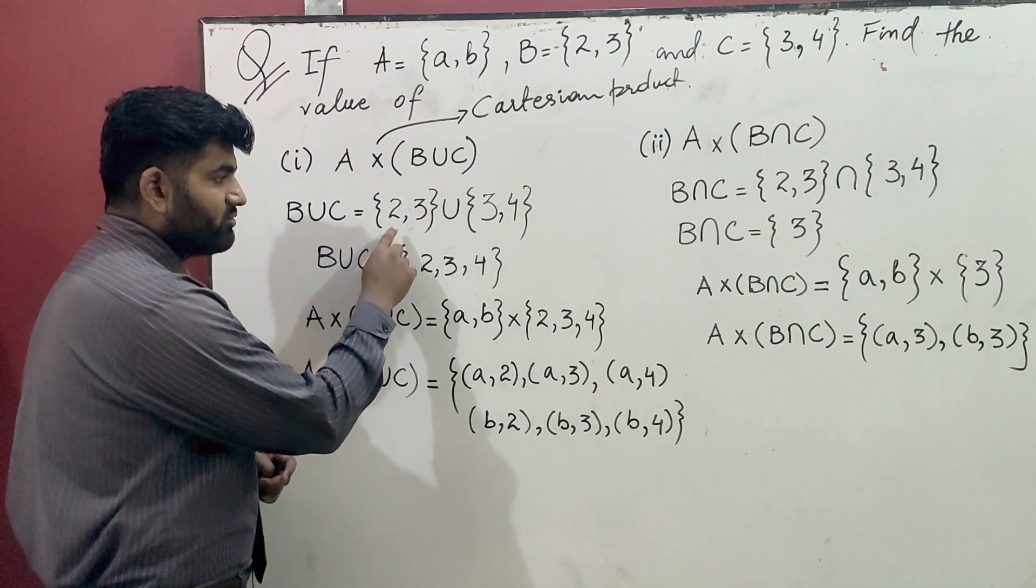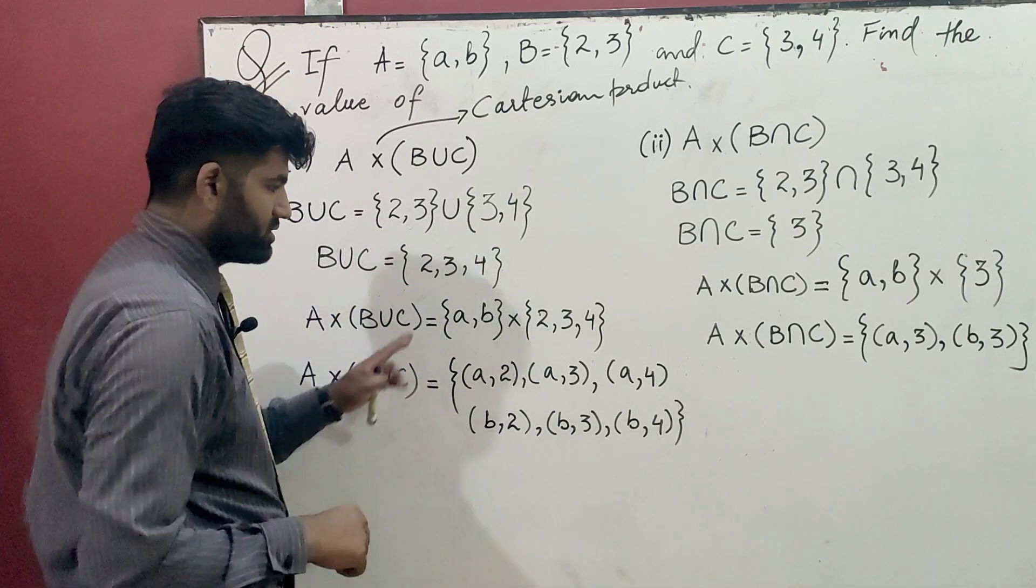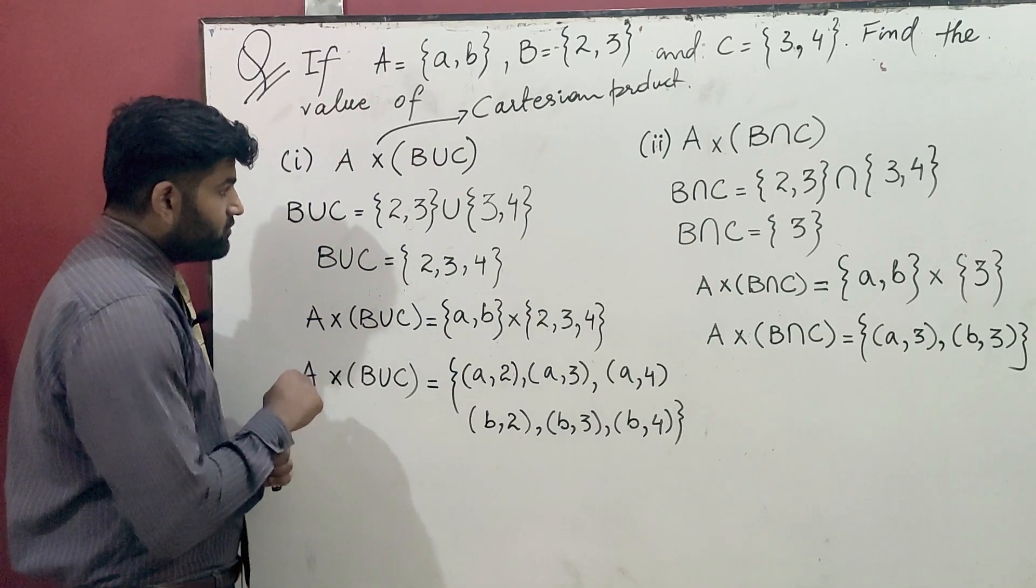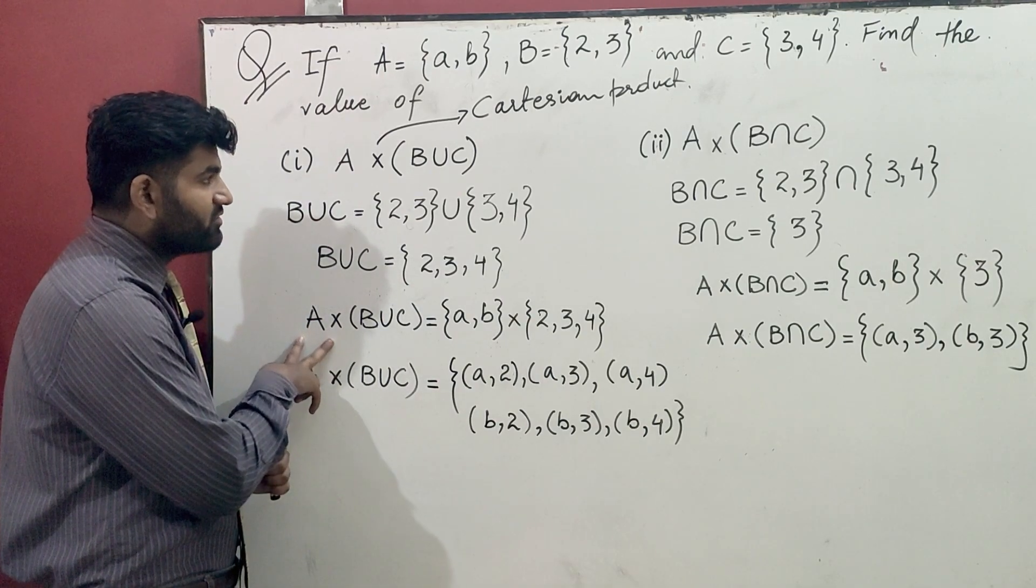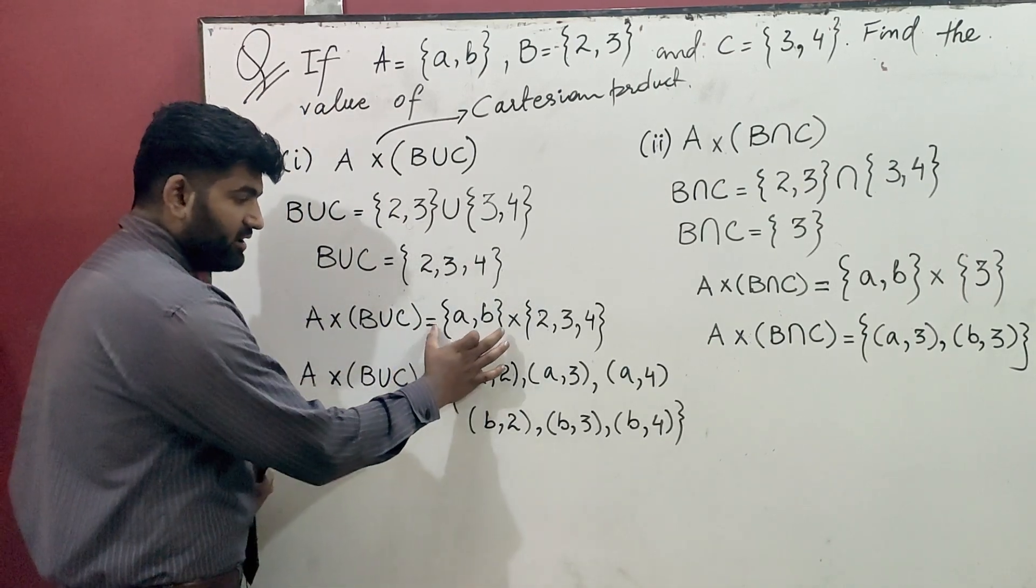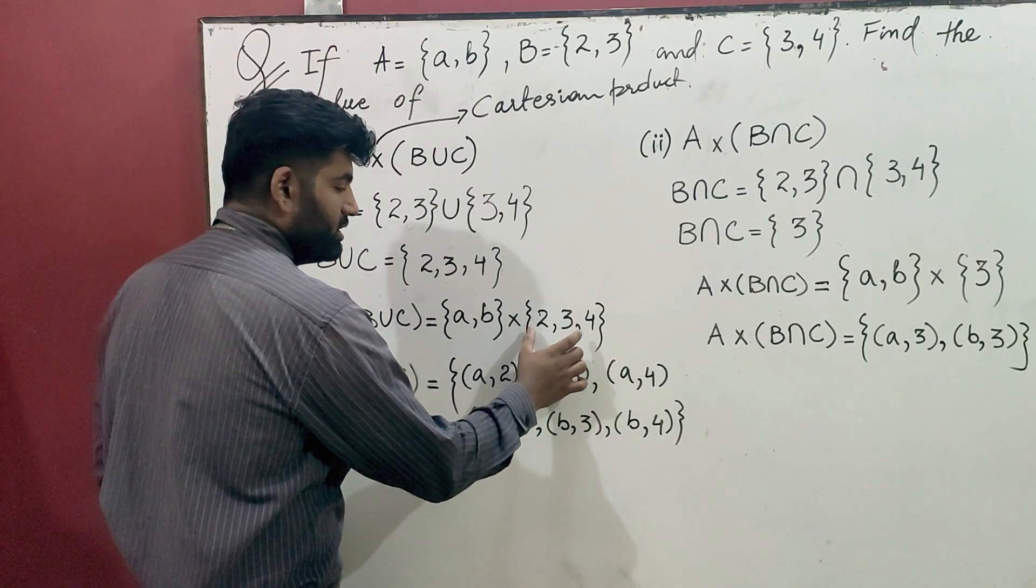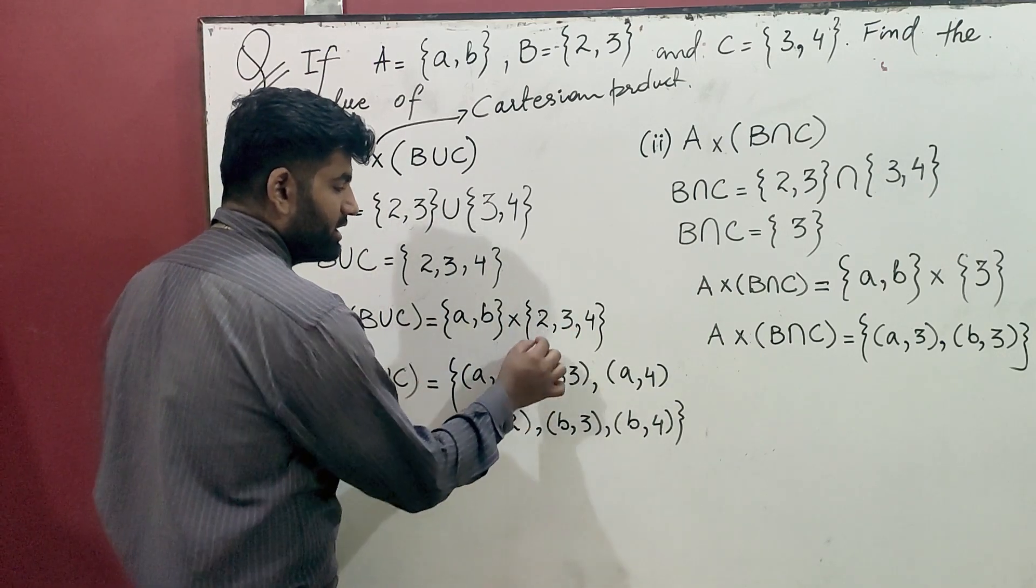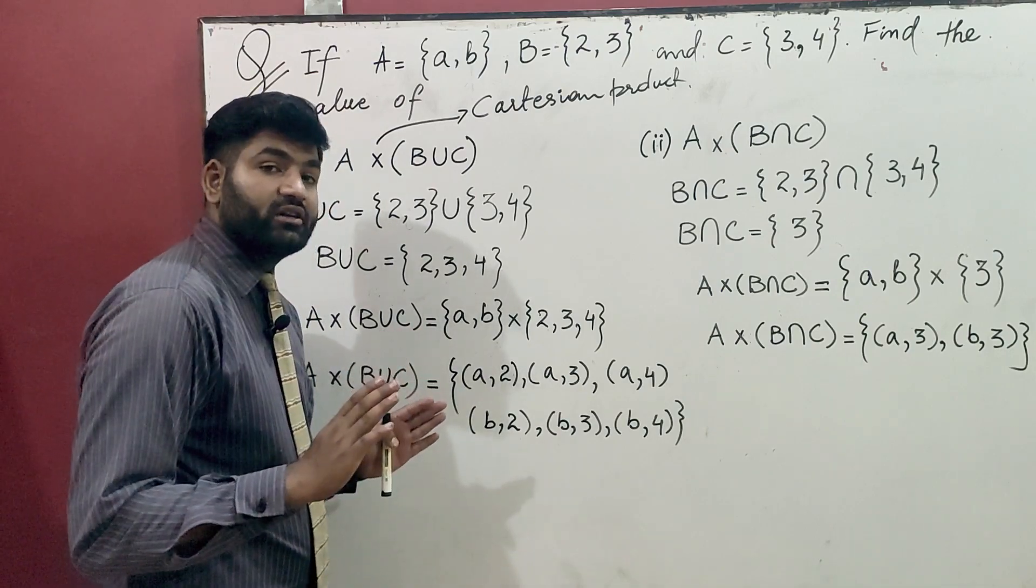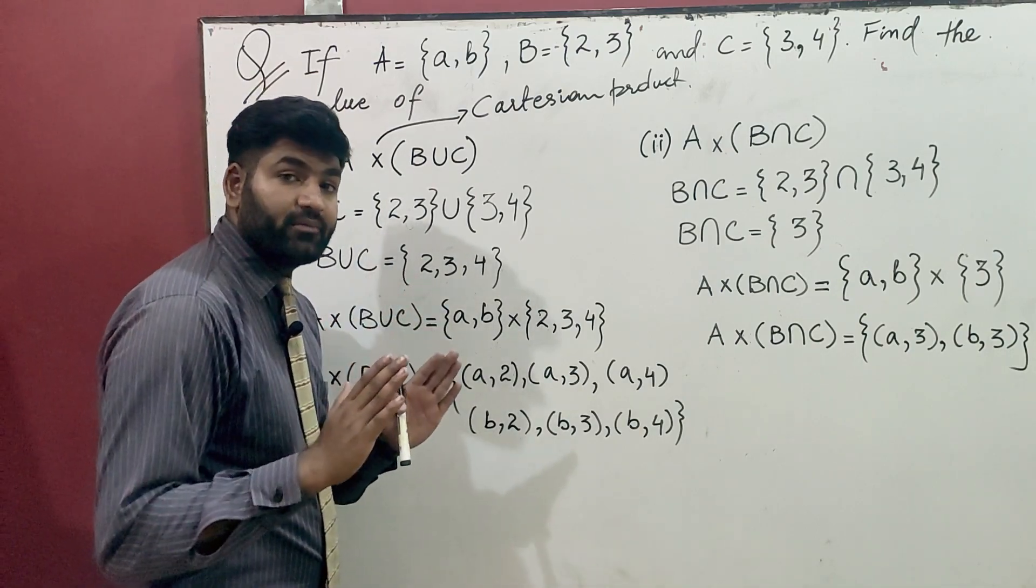It will be 2, 3 and 4. So that is the union of B and C. Then we have to find out the Cartesian product of A and B union C. In both cases, we have to find the Cartesian product. So A is A, B and B union C which is 2, 3, and 4. Now I have to explain how Cartesian product is in order pairs.